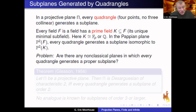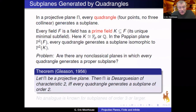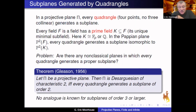We could ask: are there any non-classical planes in which every quadrangle generates a proper subplane? We don't know — it's an open problem. The best result in that direction is Gleason's theorem: if you have a projective plane in which every quadrangle generates a subplane of order two, then this is equivalent to being a Desarguesian plane of characteristic two. There's really no analog of this theorem for subplanes of order three or larger, and it seems like a really hard problem.